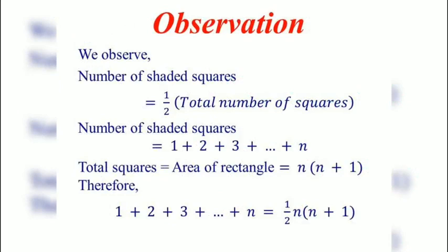What we observe from this activity: we observe number of shaded squares is equal to half into total number of squares. Number of shaded squares is equal to 1 plus 2 plus 3 plus up to n. Total squares equals area of rectangle, that is n into n plus 1. Therefore, 1 plus 2 plus 3 plus up to n equals half n into n plus 1.